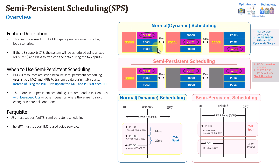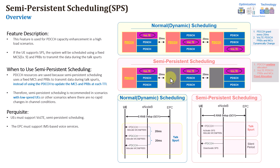Based on the PDCCH location and grant allocation, you can see, for example, in this particular scenario, we are assuming that for a particular user being moved, they're having different channel conditions. So the eNB is scheduling different locations of resource blocks and also different MCS. So the resources being changed, as you can see here. While in semi-persistent scheduling, what it will do in order to save the PDCCH and reduce the congestion condition, it will do the PDCCH allocation only one time.